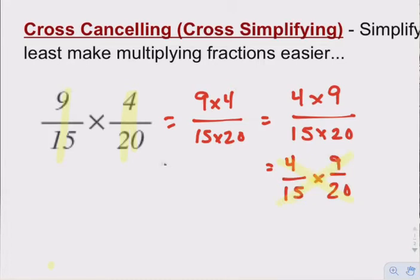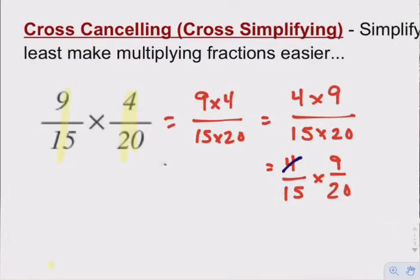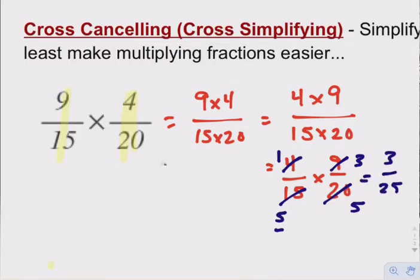Going back to the example: the 4 and the 20 are both divisible by 4, and the 9 and the 15 are both divisible by 3. Divide by 3: 9 divided by 3 is 3, 15 divided by 3 is 5. Divide by 4: 4 divided by 4 is 1, 20 divided by 4 is 5. Then multiply: 1 times 3 is 3, 5 times 5 is 25 — so 3/25. That's the idea behind cross-canceling.